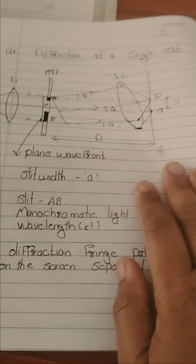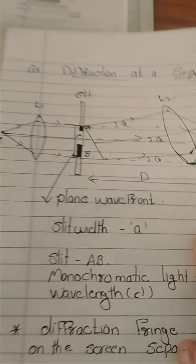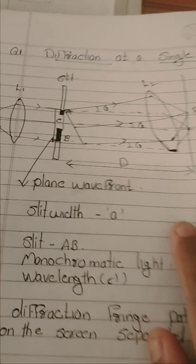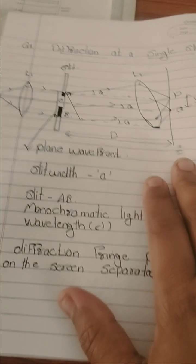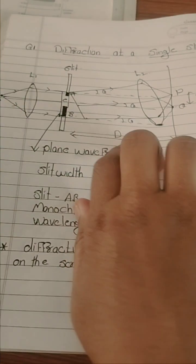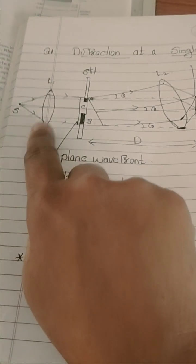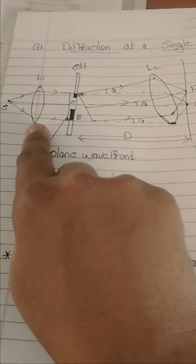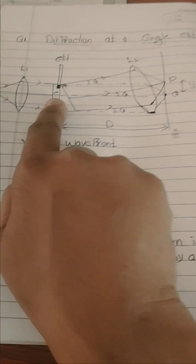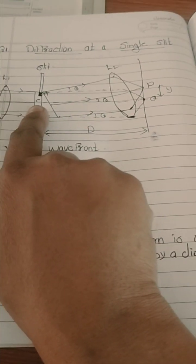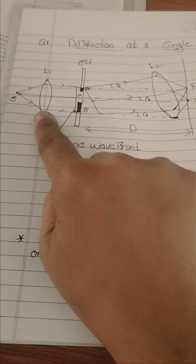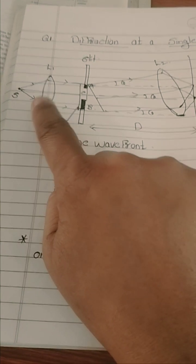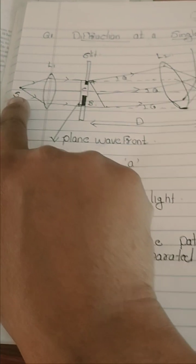One of the expected questions in the coming board exam is diffraction at a single slit. So how to draw the diagram — we should arrange one convex lens and a single slit. We are considering a single slit and convex lens L1, and S is our source.